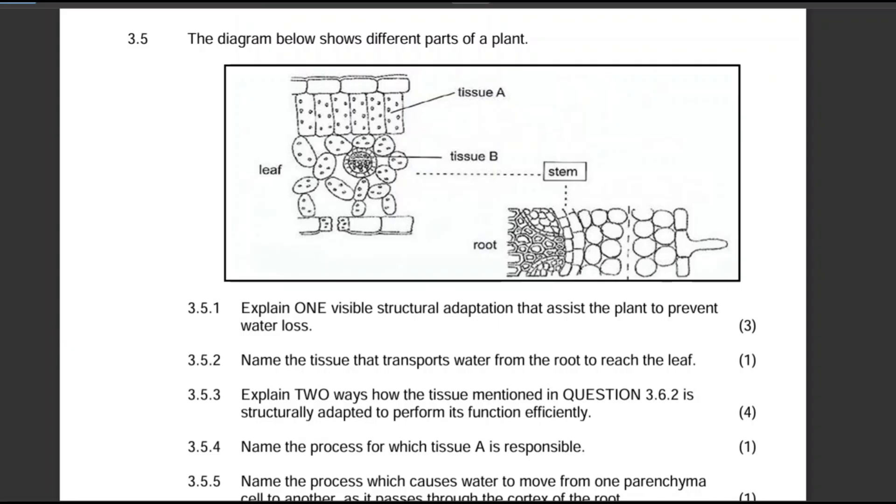The diagram below shows different parts of a plant. Obviously we are talking about the leaf, the stem, and the root. I think this is a very nice diagram because it's definitely going to test your content knowledge about plant cells and plant tissues.